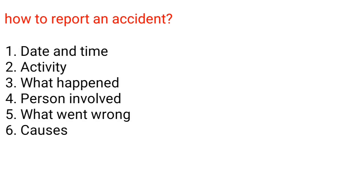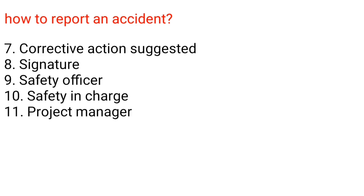How to report an accident: 1. Date and time. 2. Activity. 3. What happened. 4. Person involved. 5. What went wrong. 6. Causes. 7. Corrective action suggested. 8. Signature. 9. Safety officer. 10. Safety in charge. 11. Project manager.